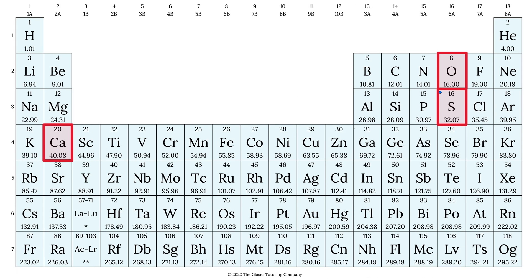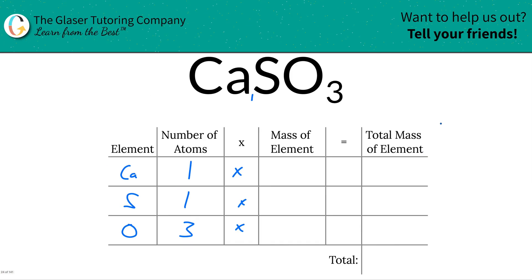Here's calcium, 40.08. Oxygen is 16. Sulfur is about 32.07, so let's write them in. Calcium is 40.08, sulfur was 32.07, and oxygen here was 16.